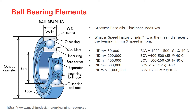On the contrary, if the NDM is around 1 million, the base oil viscosity required for the grease is between 15 to 32 cSt at 40°C, meaning the bearing is rotating very fast. Using this calculation will help us choose the correct base oil viscosity for the bearing application.